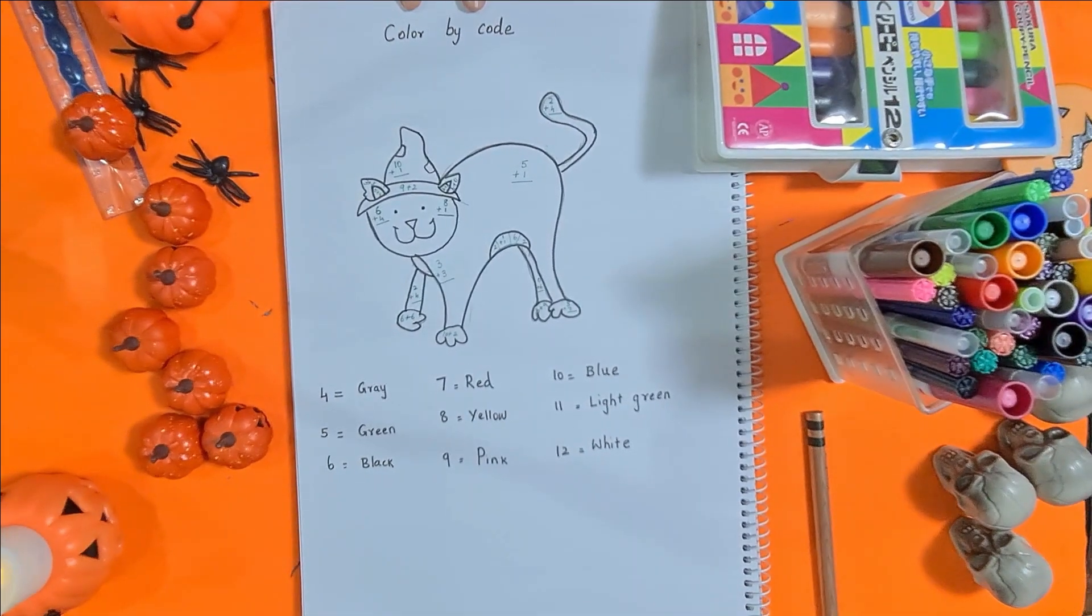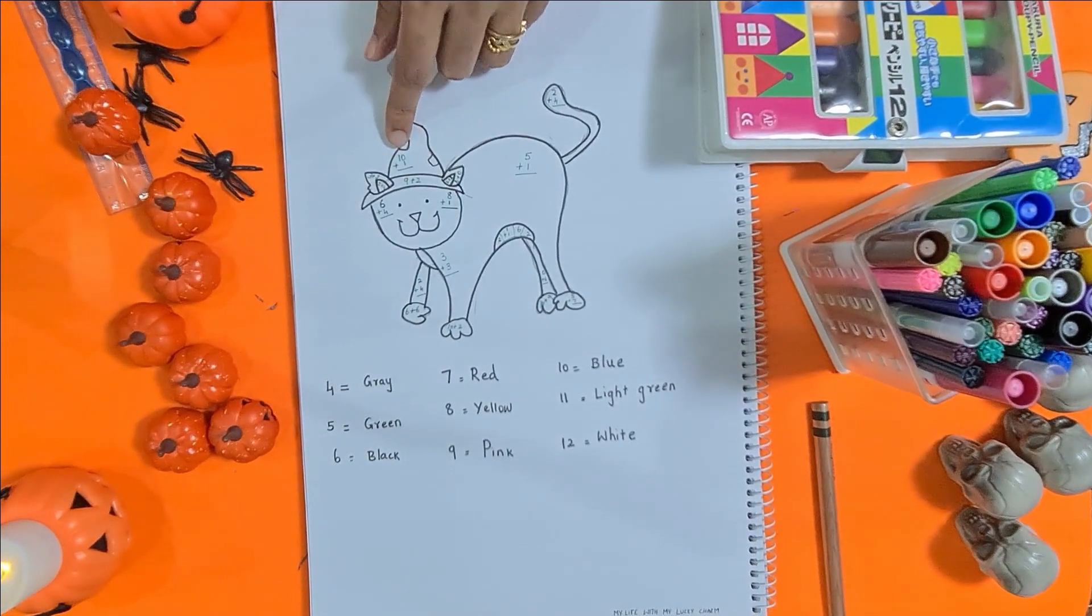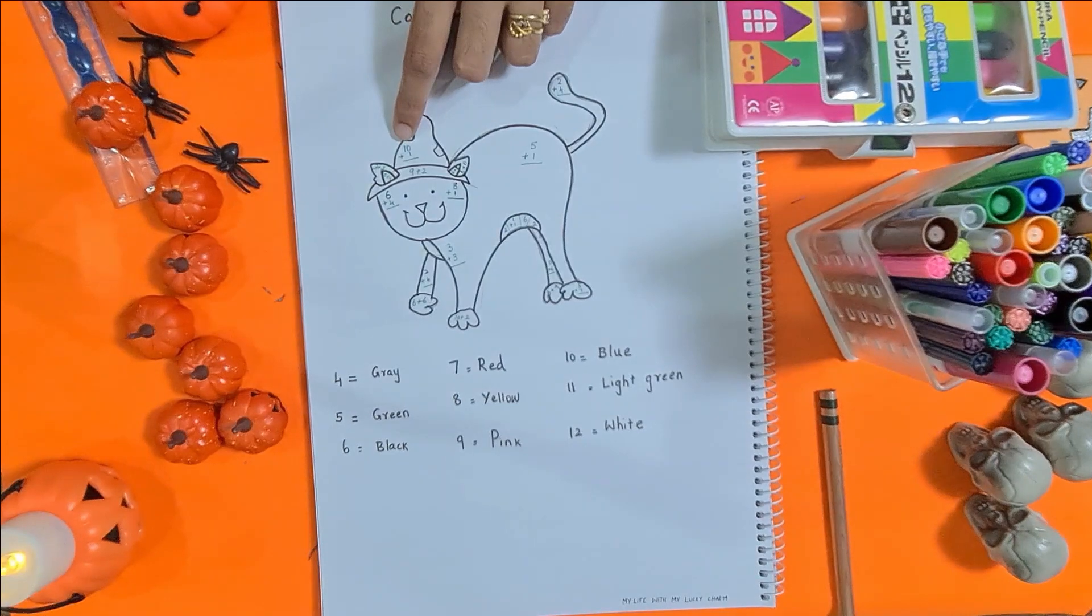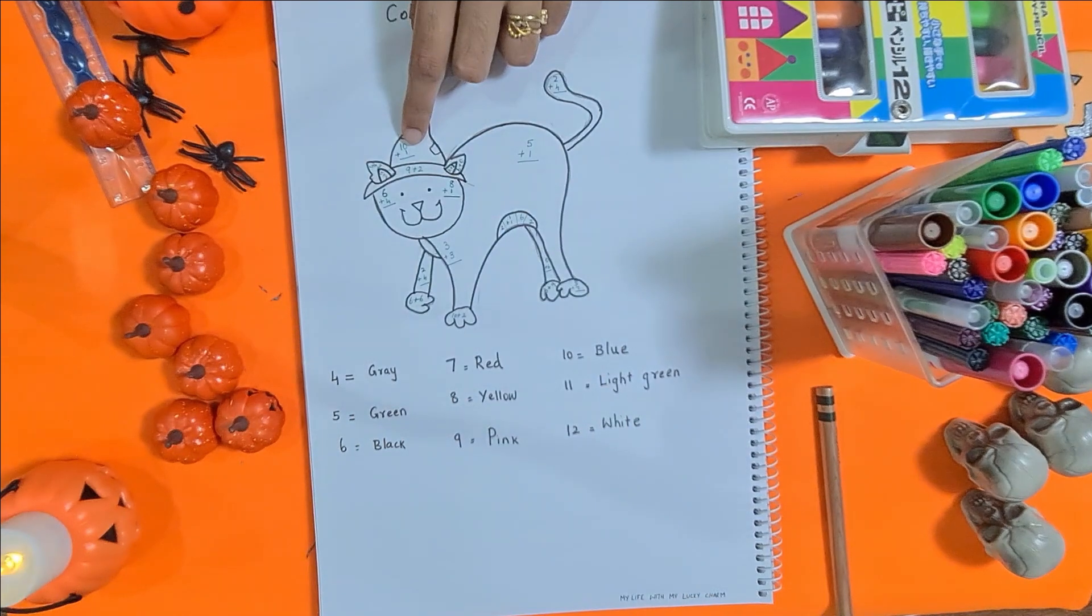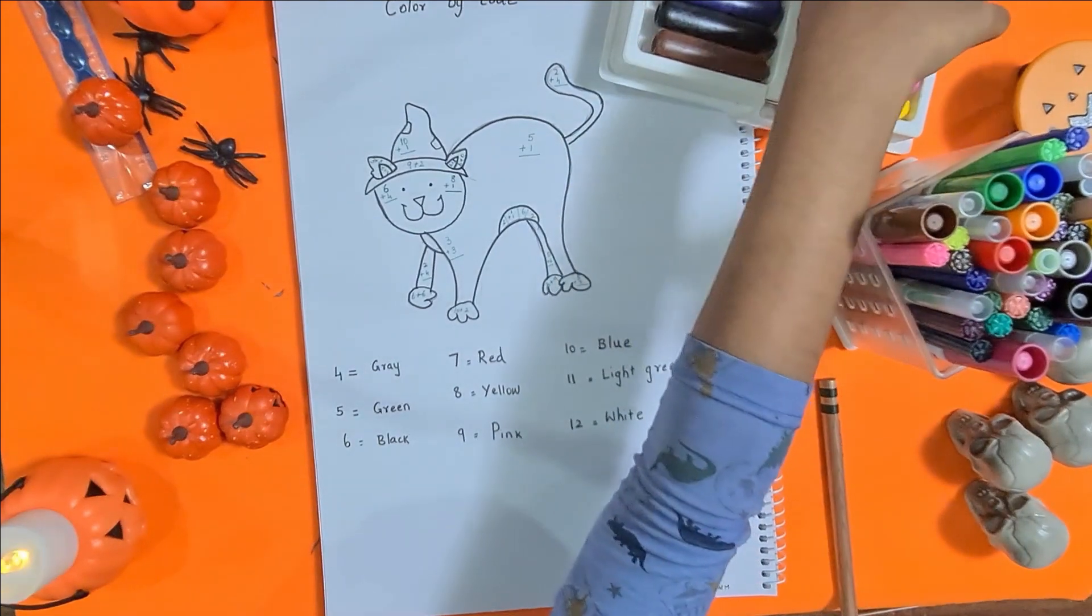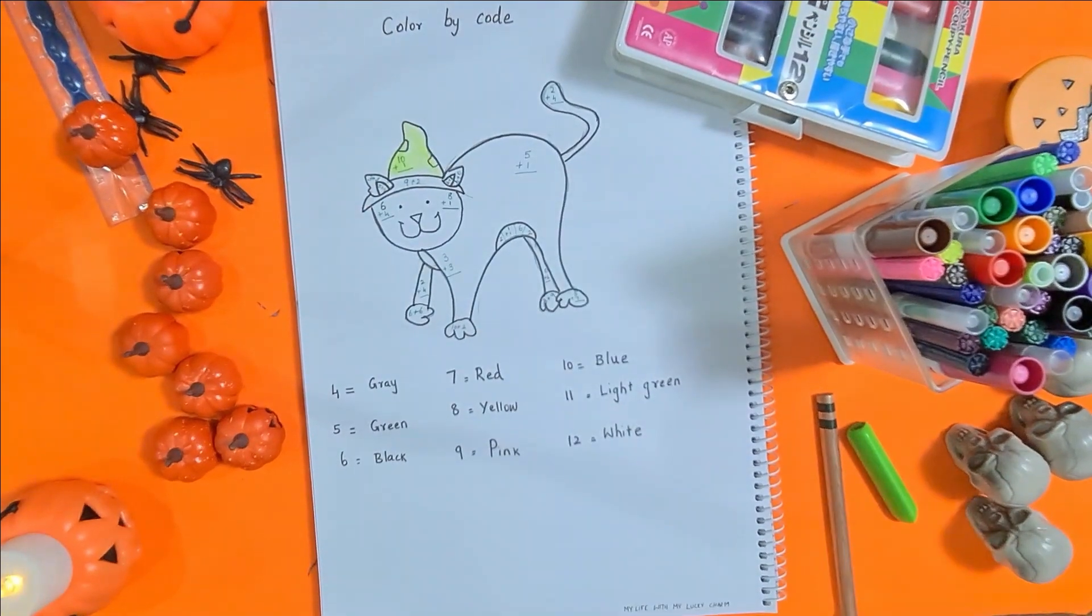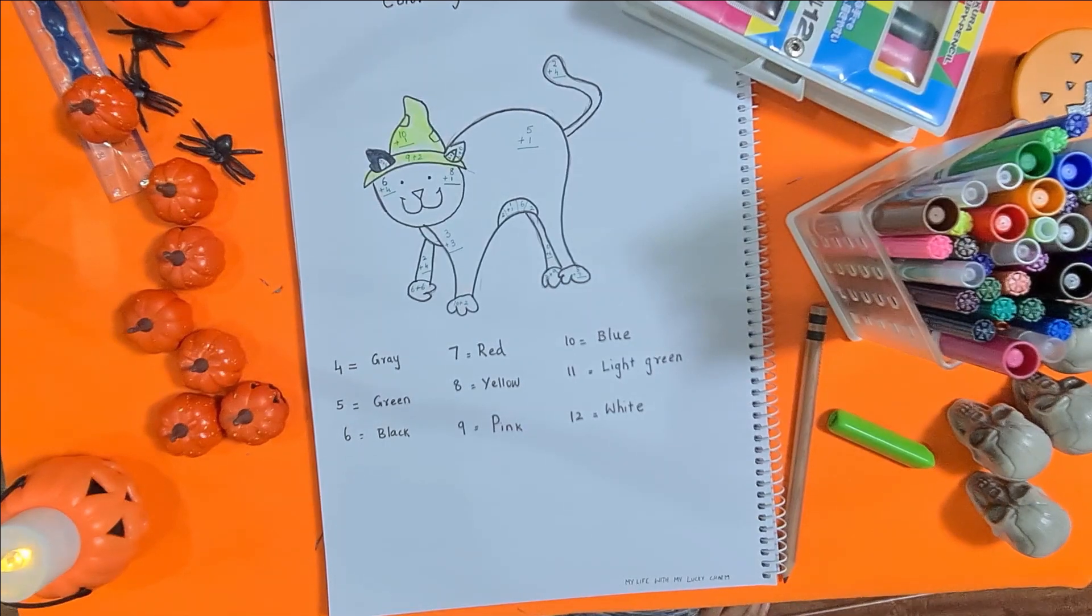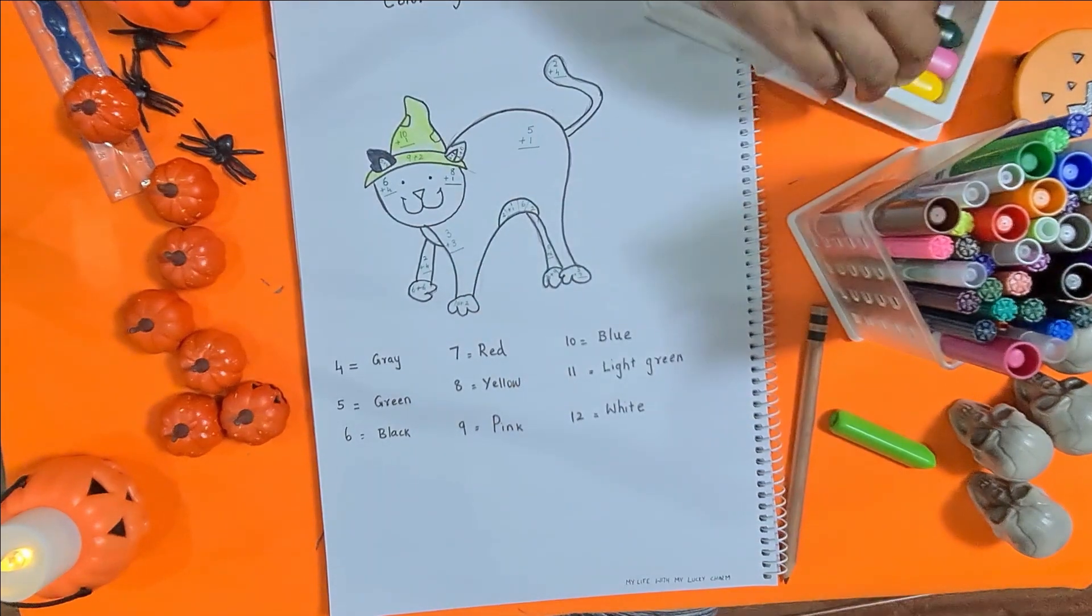The next activity is just a color by code. Here I have given few simple addition numbers and the answer is matched to a color code. For example, here it is ten, ten and one, ten and one makes eleven. So what is the color code for eleven? Light green. I'm going to take it right here. Five plus four is nine, so nine is pink. I like pink, it's my favorite color.